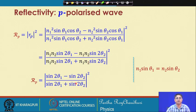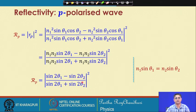With some algebraic manipulation, the energy reflection coefficient can be written in the compact form: R_p = [sin(2*theta1) - sin(2*theta2)]² / [sin(2*theta1) + sin(2*theta2)]². This reduced form does not involve n1 or n2 directly — only the angles theta1 and theta2, the angle of incidence and angle of refraction, determine how much energy is reflected from the interface.